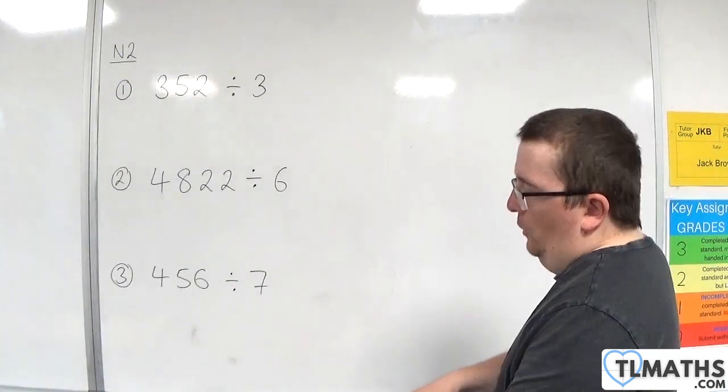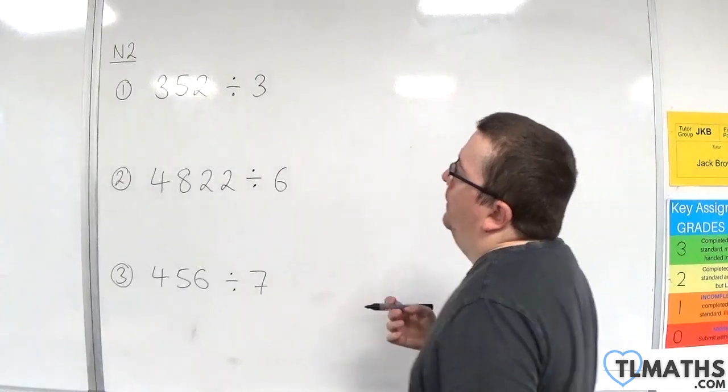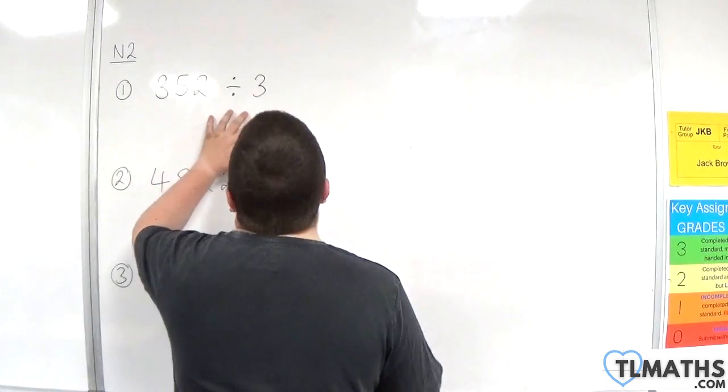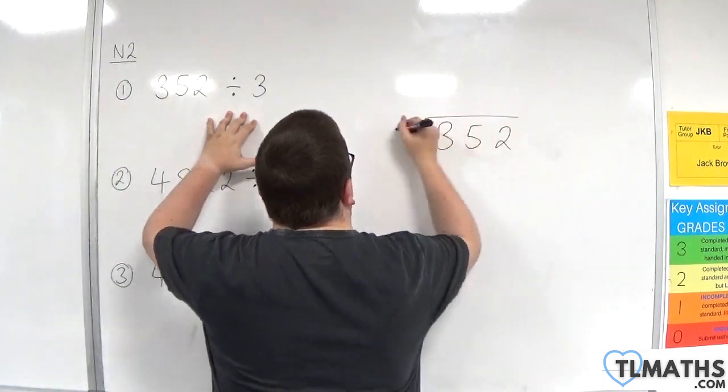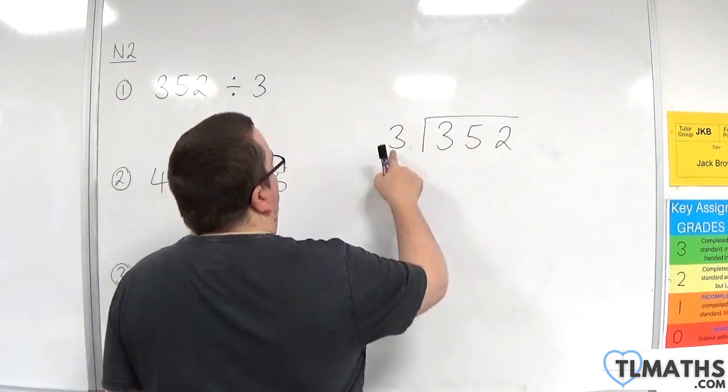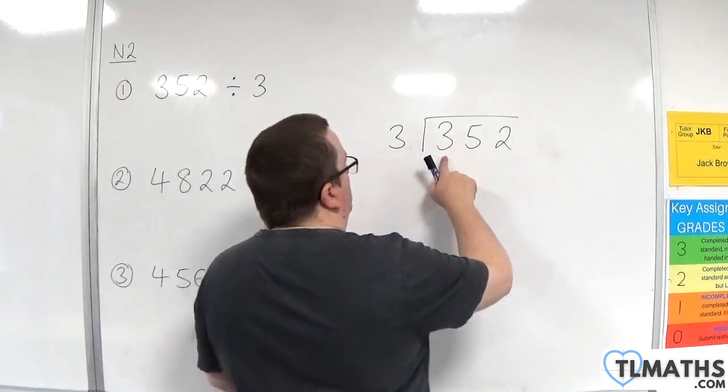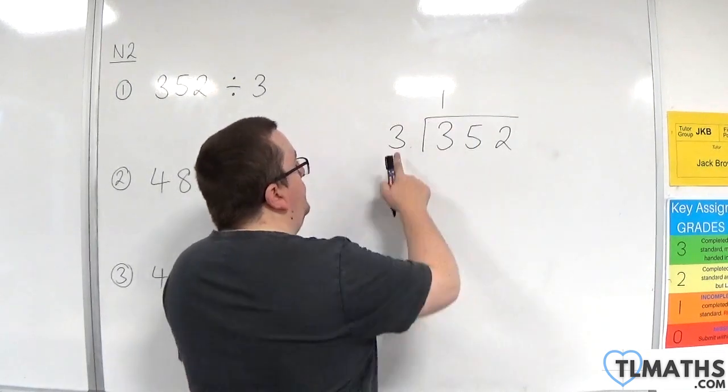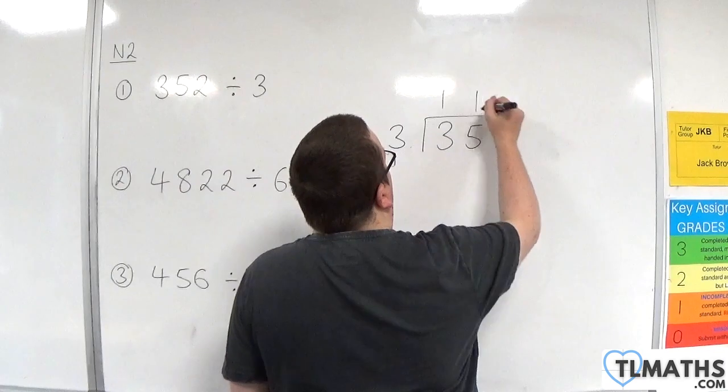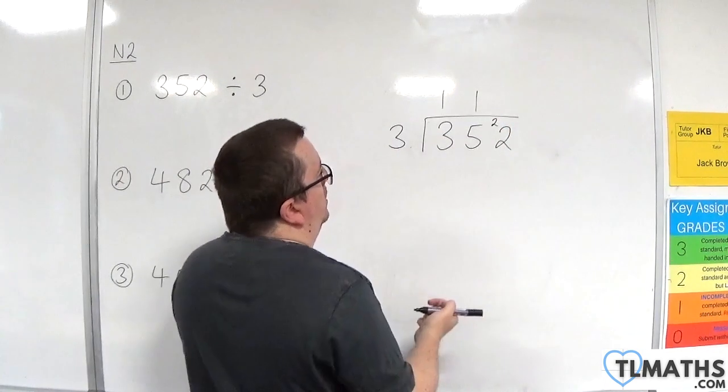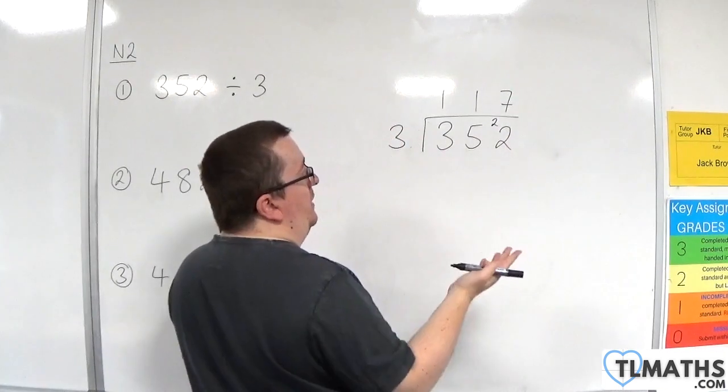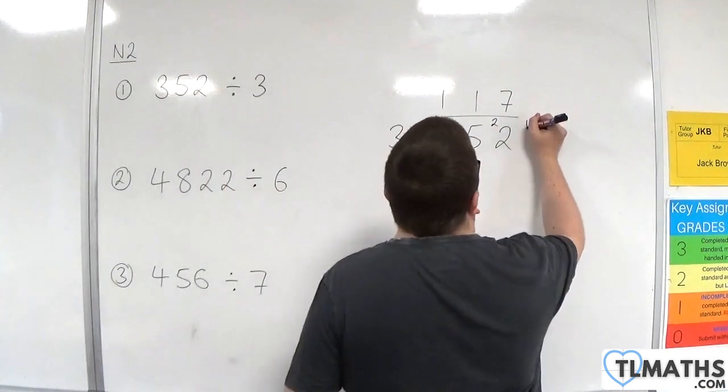Let's take a look at example number one. 352 divided by 3. 3 into 3 goes once. 3s into 5 go once with 2 left over. 3s into 22 go 7. 7 times 3 is 21 with 1 left over.